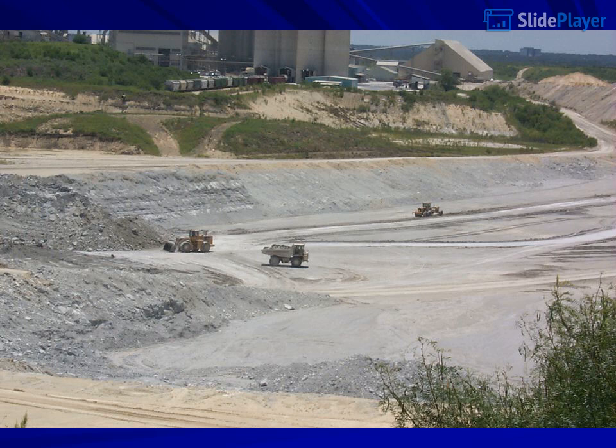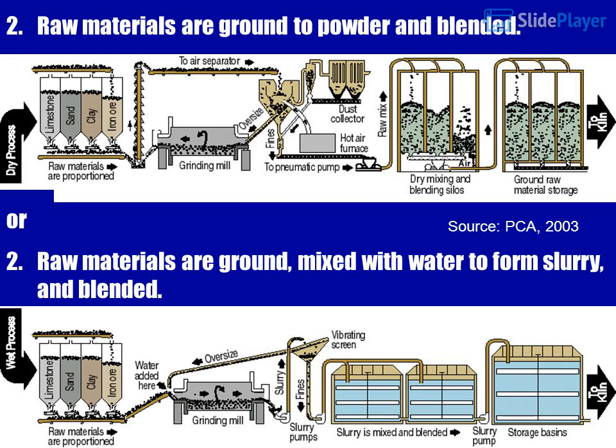Two benches — no blasting, only ripping; five 10-hour shifts; haul trucks 2 to 7, 96C Cat, 1 to 35R Euclid; 988 Cat loaders. Raw materials are ground to powder and blended.